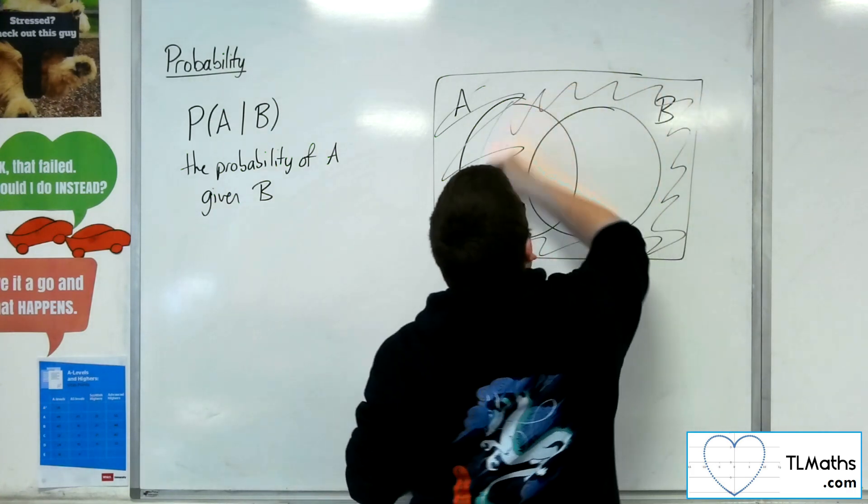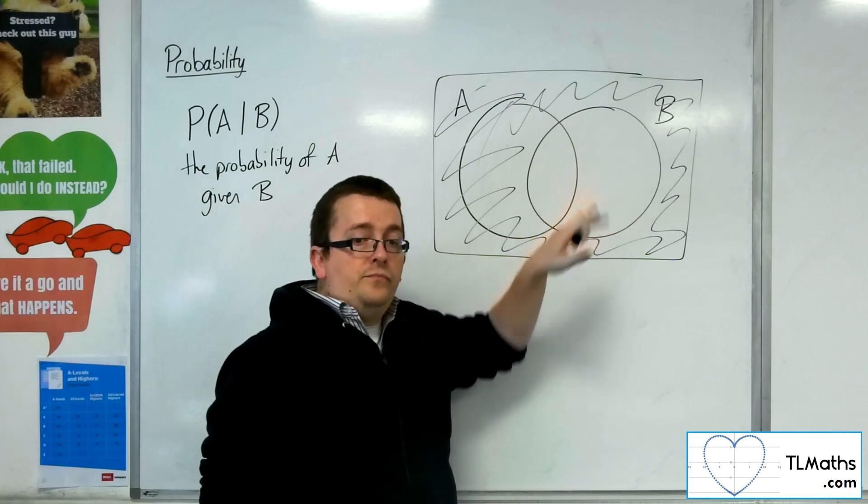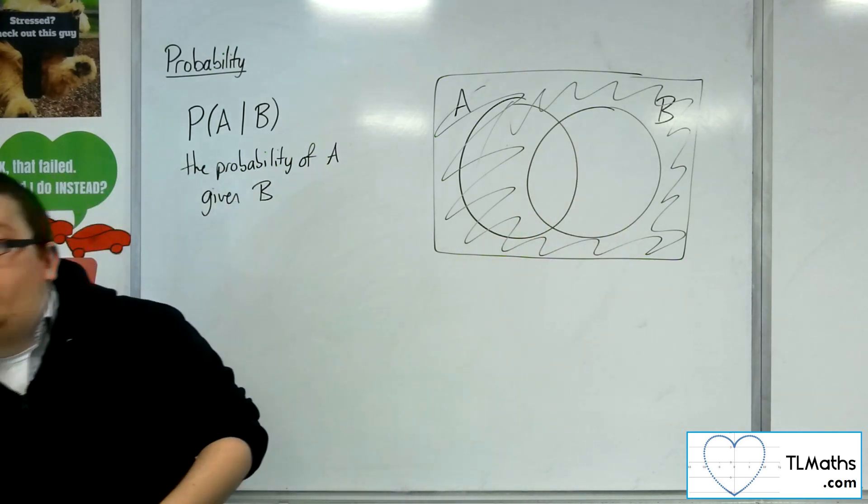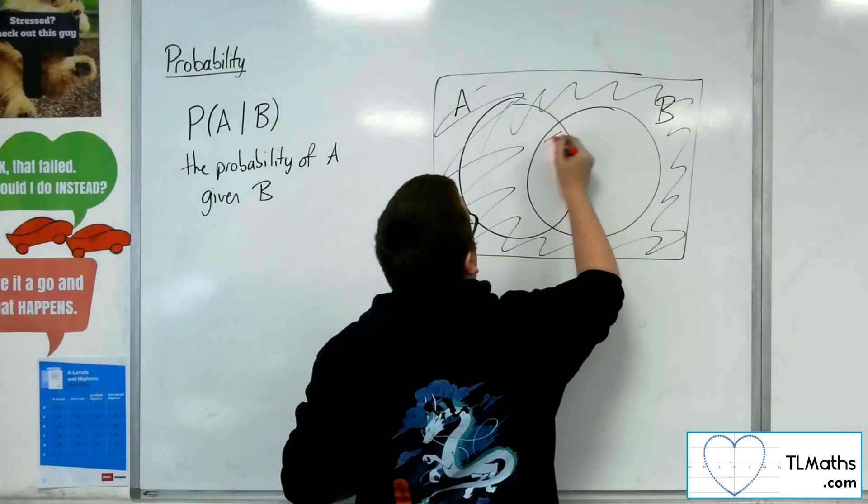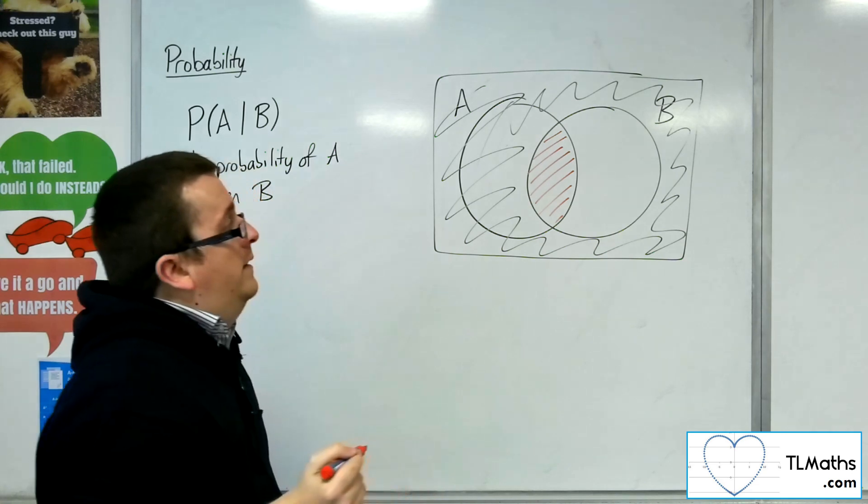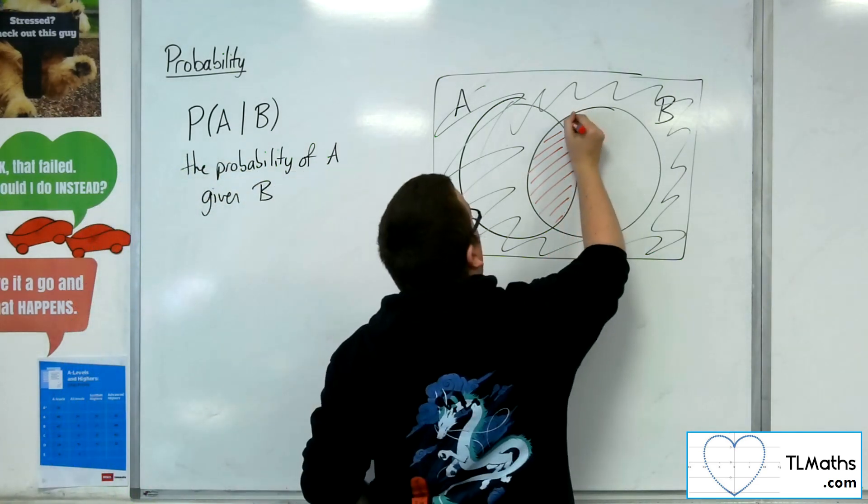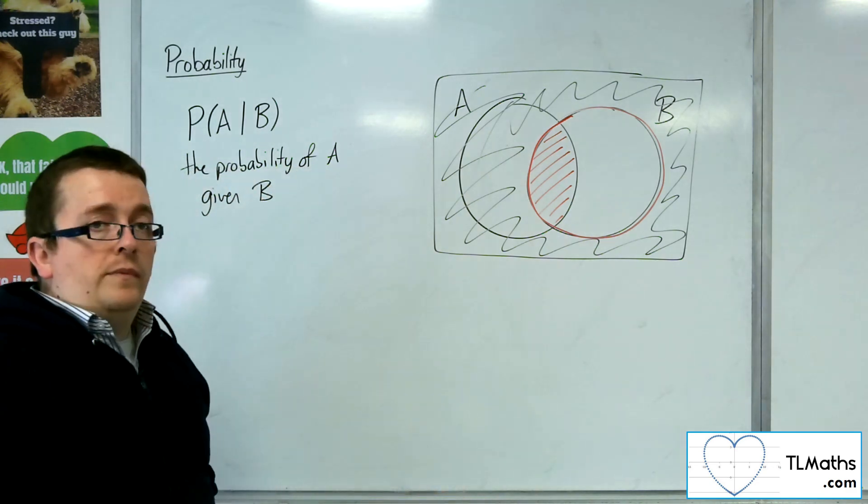Right? There isn't B. And I'm just looking at that circle. So if then I ask, well, what's the probability of getting A? Well, the probability of getting A is whatever is within that intersection there out of what we have for B.